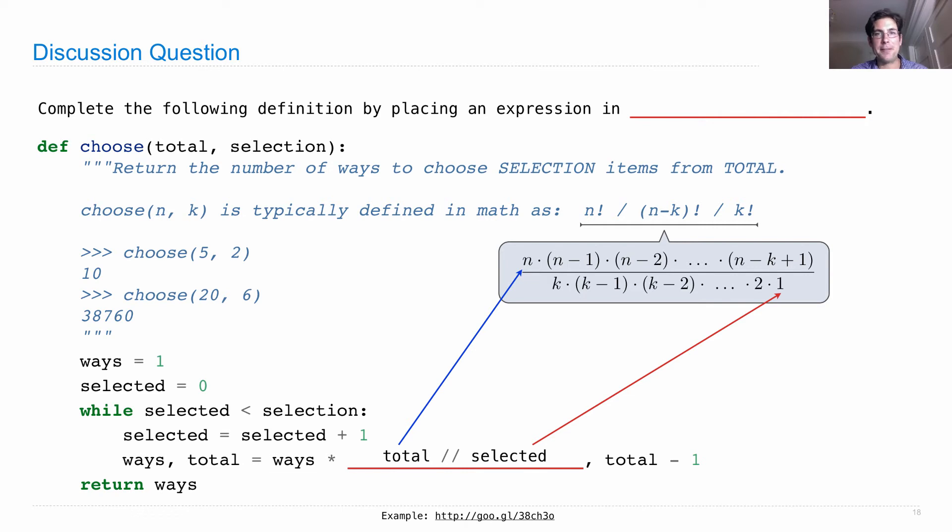A second iteration through the while statement, you multiply in the second and divide out the two, and after k passes through, you've multiplied in every term and divided out every term in the denominator. Now notice that I used integer division